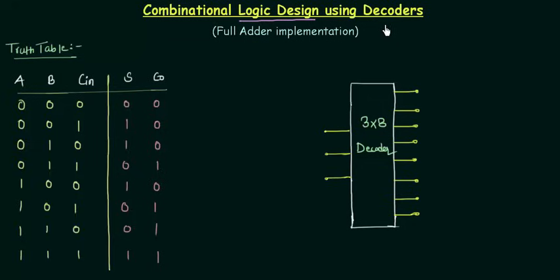Now what is the advantage of using the decoders in place of the conventional method of logic implementation? The first advantage is that we are going to use a single IC, but in conventional method we require so many gates and wires. So the space is reduced when we implement a logic by using the decoders and also the cost.